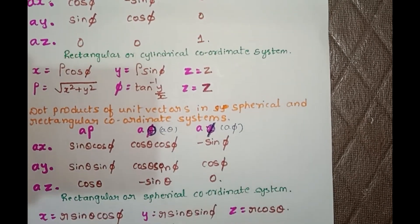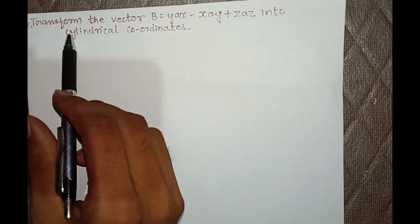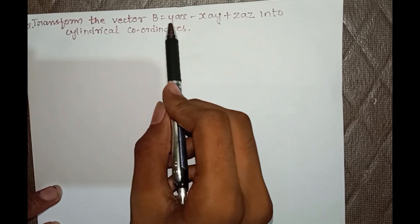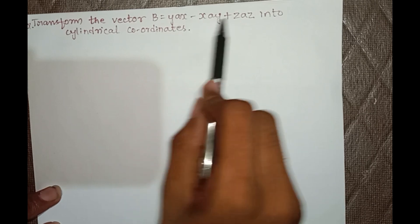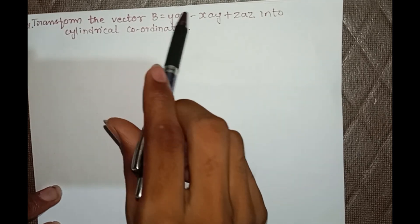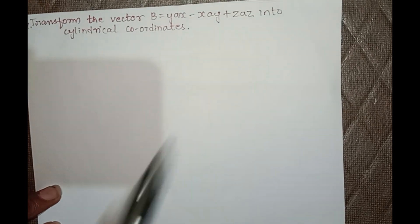I already told this in the beginning — please try to make note in your notes. We can continue further with the questions asked in the examination and example problems from the textbook. This is the first question, an example problem from the textbook: transform the vector B = y·â_x − x·â_y + z·â_z into cylindrical coordinate system.